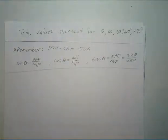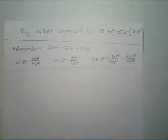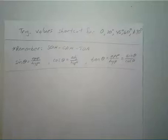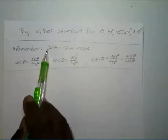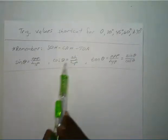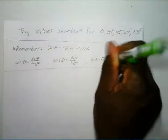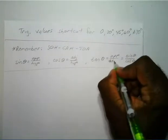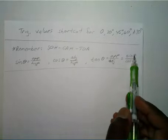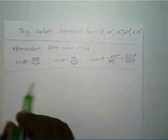Hello everyone. In this video I'm going to show you a quick way to remember the values for all six of your trig functions. Starting off, remember your SOHCAHTOA: sine is equal to opposite over hypotenuse, cosine is equal to adjacent over hypotenuse, and tangent is equal to opposite over adjacent — but it is also equal to sine over cosine.